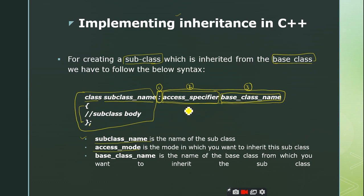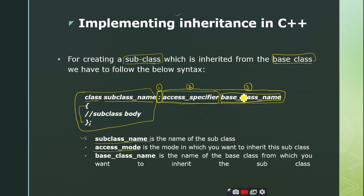In the next slide we will discuss the modes of inheritance where you will get a clear idea of what the access specifier does during inheritance. We know the general use of public, private, and protected, but why we specify the access specifier during inheritance has special importance. The axis mode tells the compiler to acquire the base class properties in public, private, or protected mode.